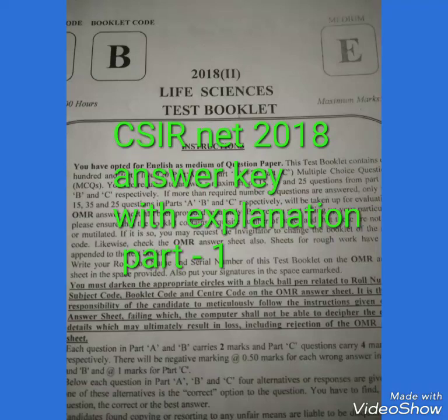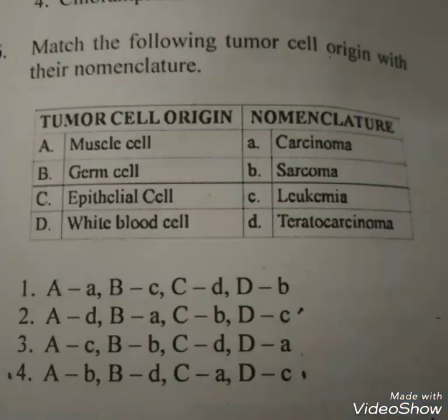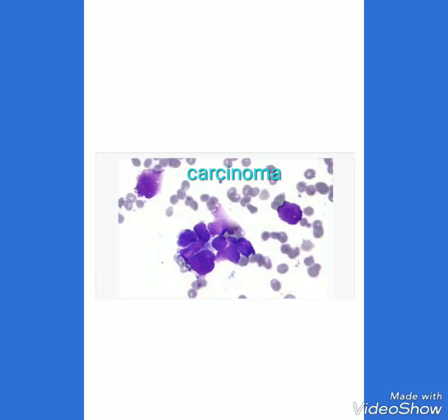Hello and welcome back. My today's topic of discussion is the different types of cancer cells and their origin. There are four types of cancer cells: carcinoma, sarcoma, leukemia, and lymphoma and myeloma.